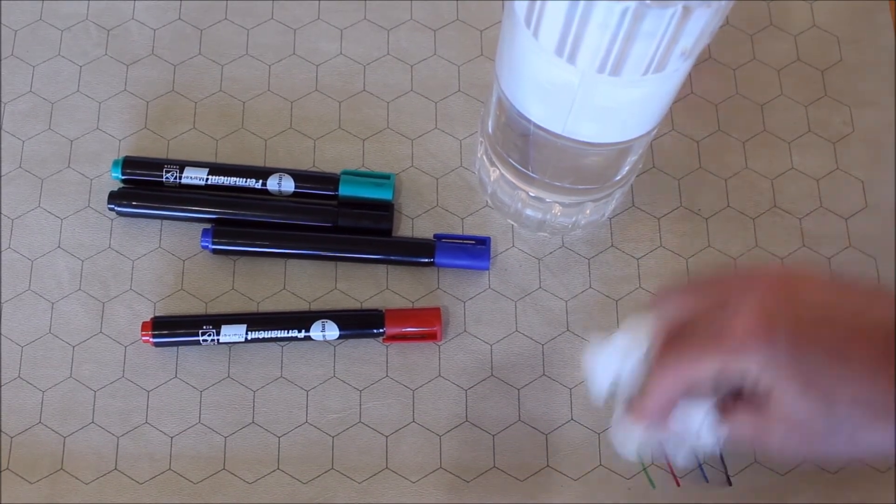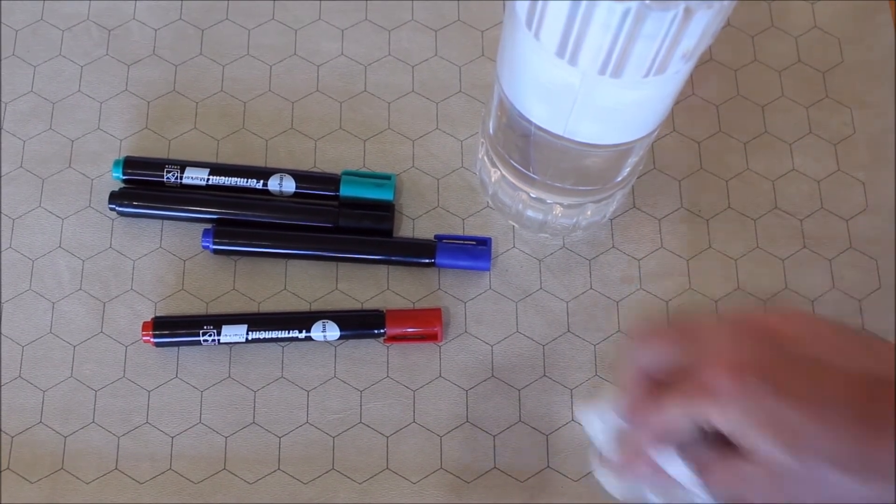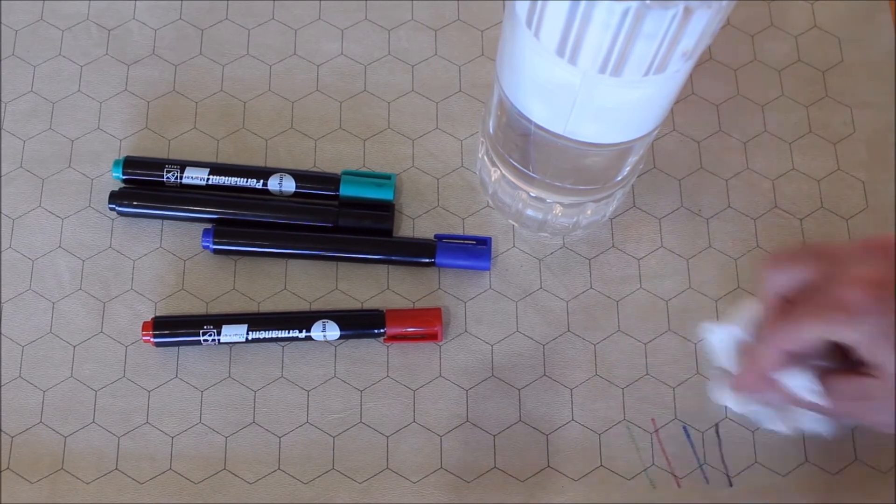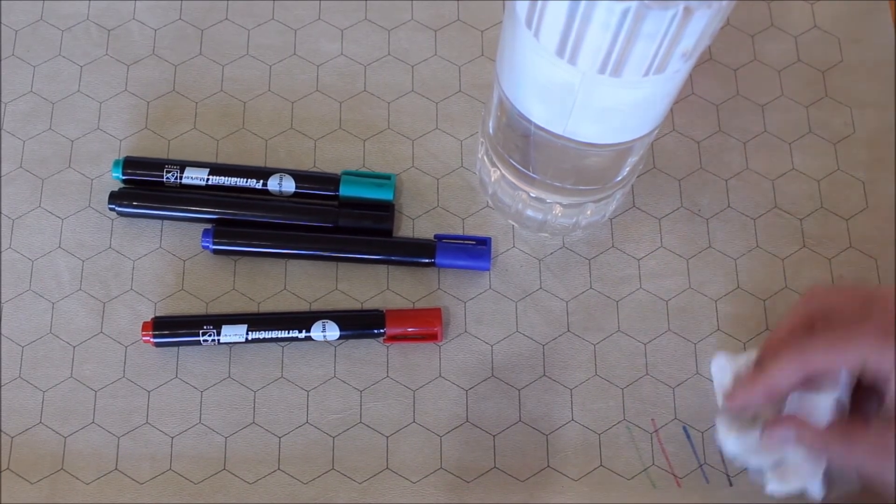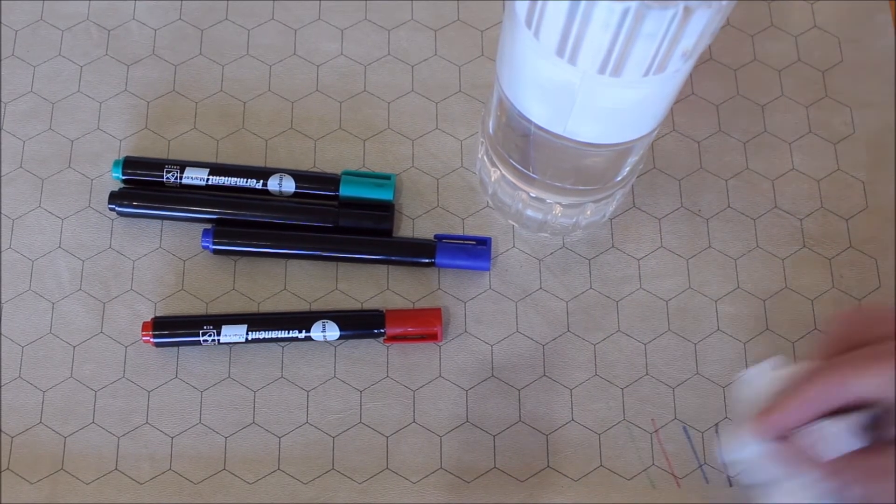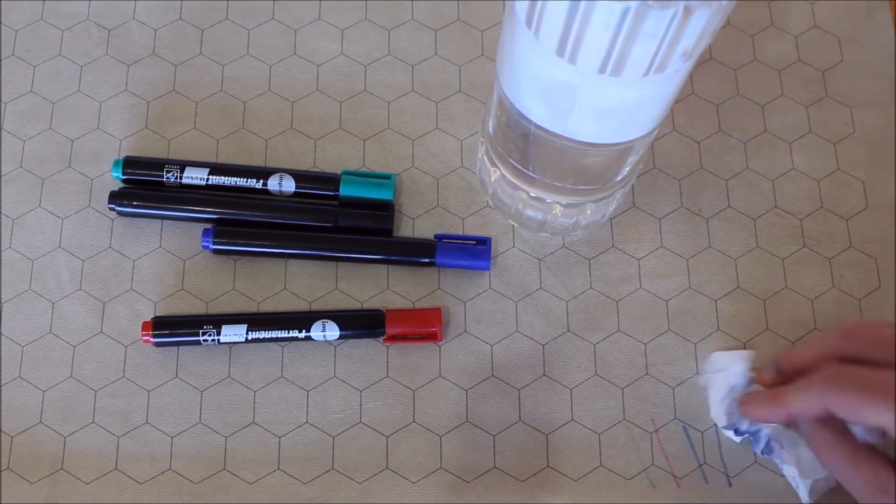So there is mineral turpentine. Oh the blue just went all smudgy, and the black, and the red, and the green. That certainly did something to it pretty quickly. So that's good news. Is the grid disappearing though? That's the question.